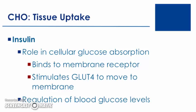Once the GLUT4 channels are present on the membrane of the muscle cell, glucose can then enter the muscle cell and is available to undergo subsequent reactions of energy metabolism, such as glycolysis. This process of insulin-dependent glucose uptake by the cell plays a role in regulating blood glucose levels.